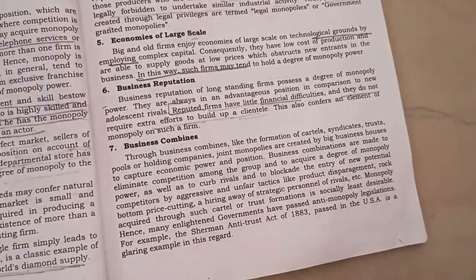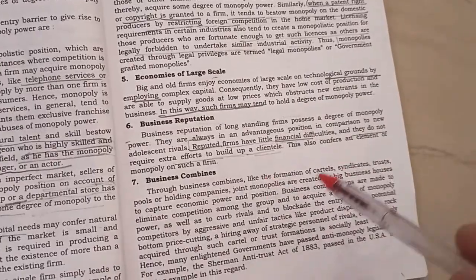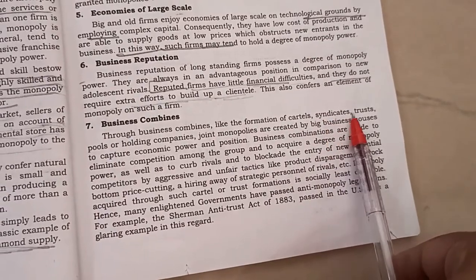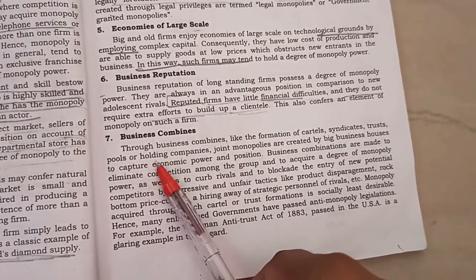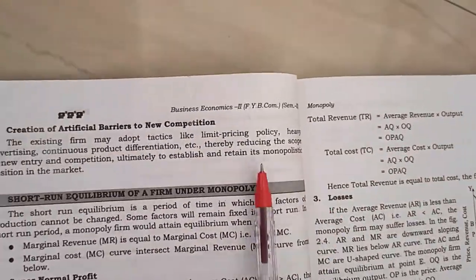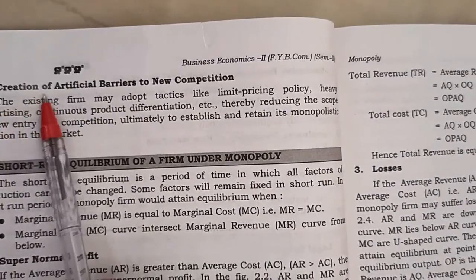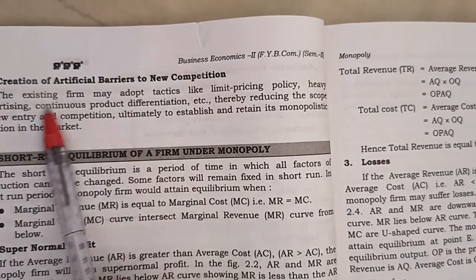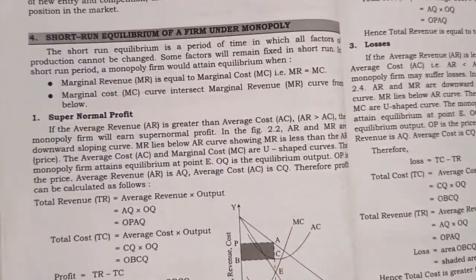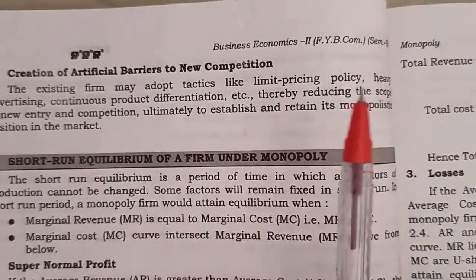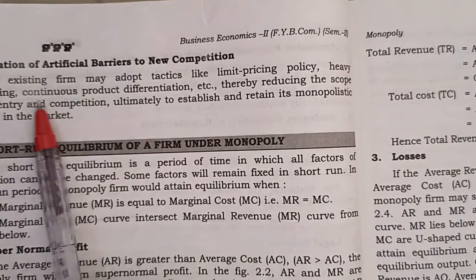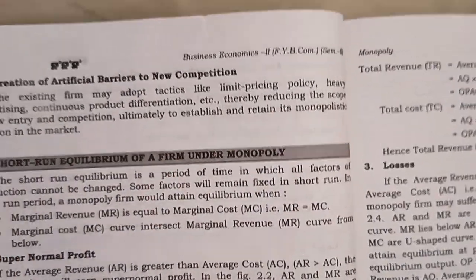The seventh source is business combines — combining your business through the formation of cartels, syndicates, trusts, pools, holding companies, joint ventures, etc. The eighth and final source is creation of artificial barriers to new competition, such as limit pricing policy, heavy advertisement, and continuous product differentiation.